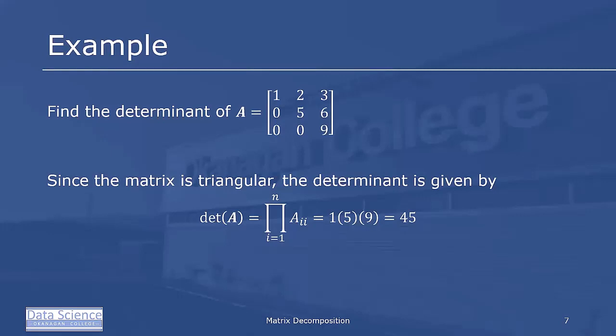As an example, consider the matrix A = [[1,2,3],[0,5,6],[0,0,9]]. It's upper triangular since all entries below the main diagonal are 0. Since it's triangular, the determinant is the product of the diagonal entries: 1×5×9 = 45.